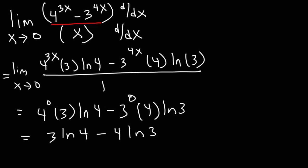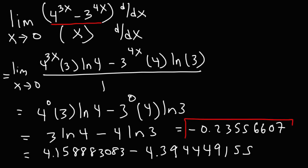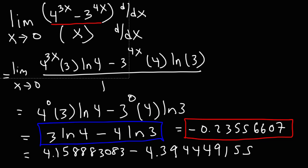Now let's get the decimal value of these expressions. 3 times the natural log of 4 is approximately 4.158883083, and 4 ln 3 is approximately 4.394449155. Subtracting those two — or simply typing in 3 ln 4 minus 4 ln 3 — gives us negative 0.23556607. That's the rounded decimal, but 3 ln 4 minus 4 ln 3 is the exact answer. That's how you evaluate this limit involving exponential expressions.